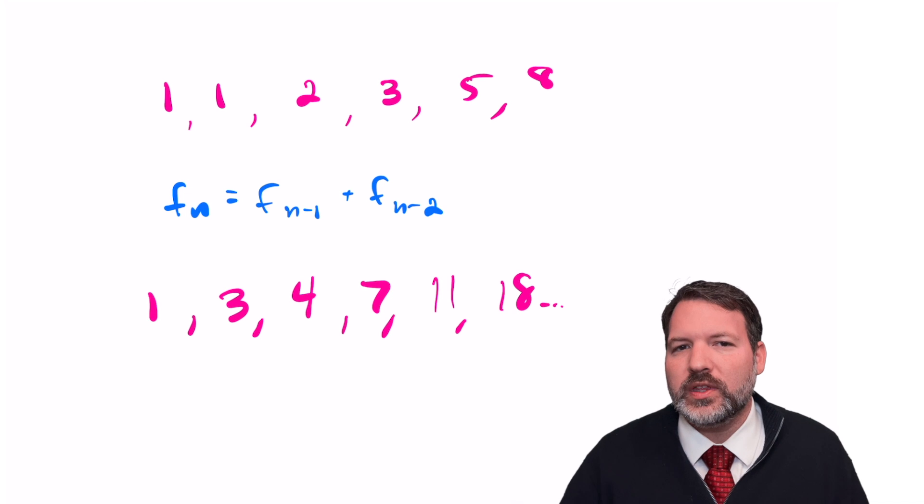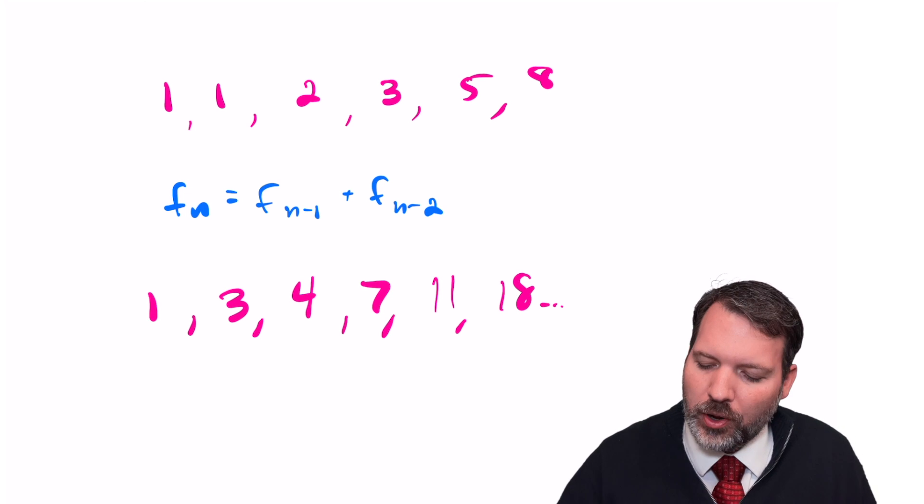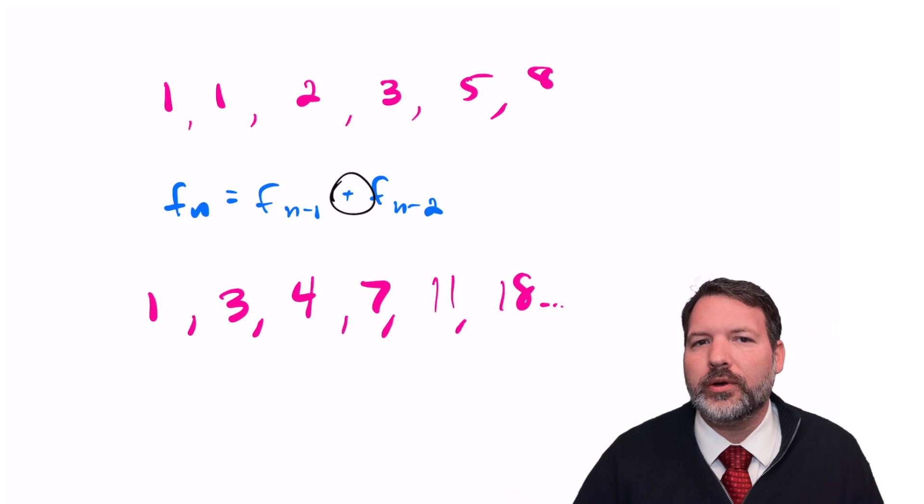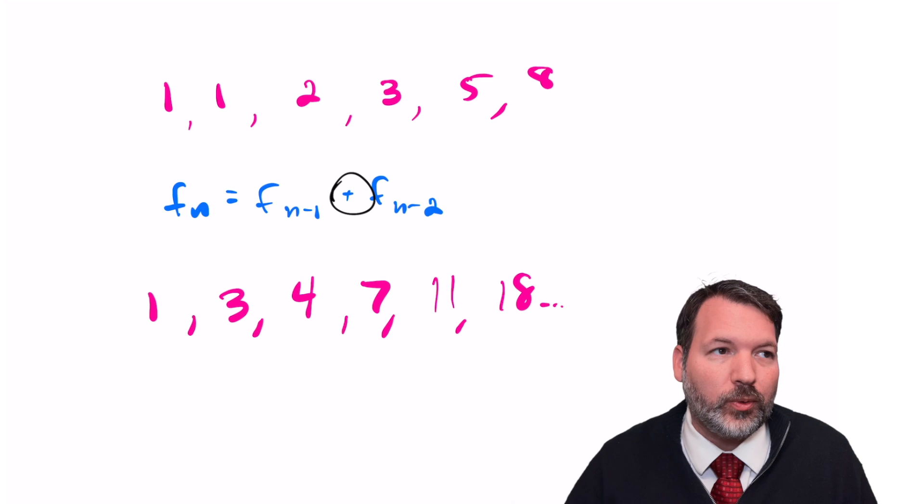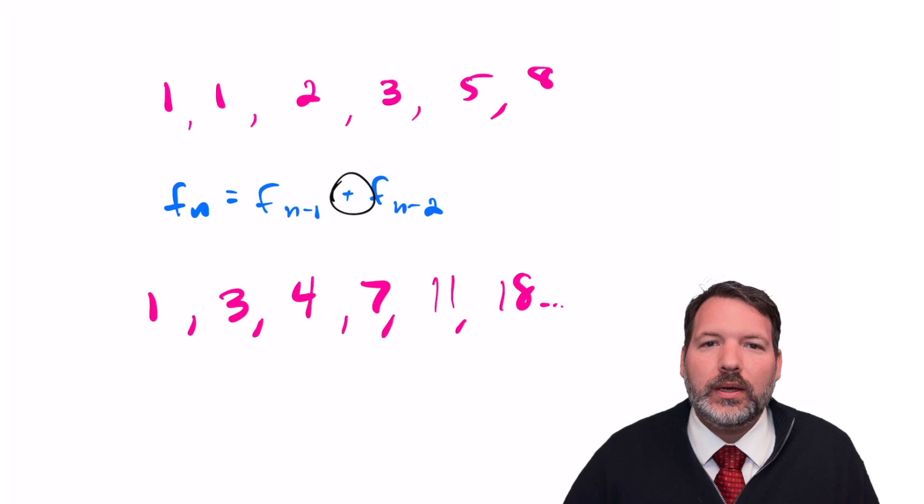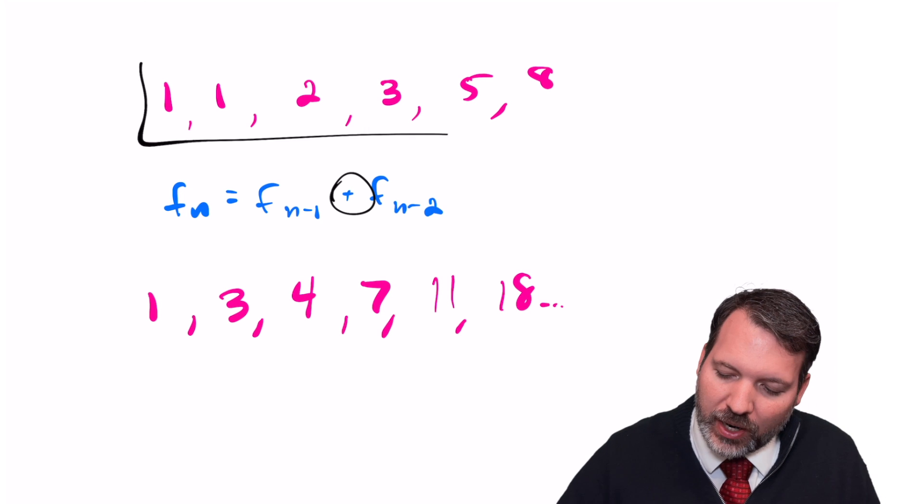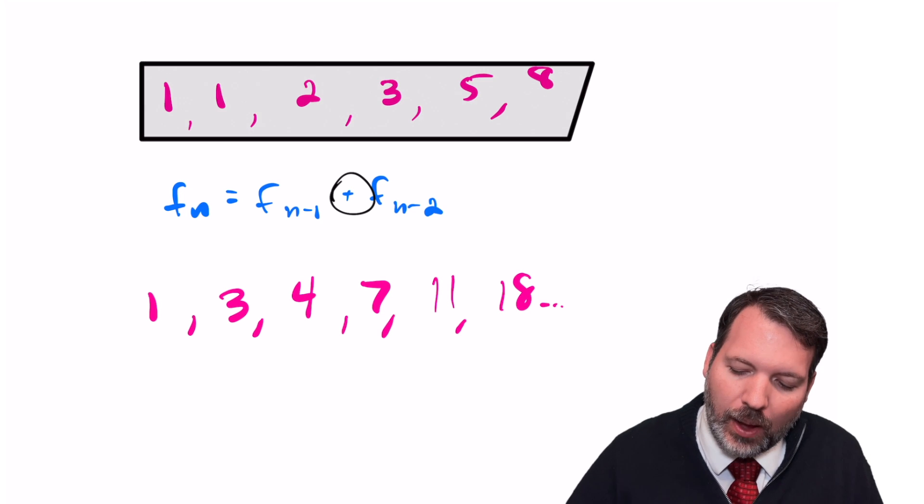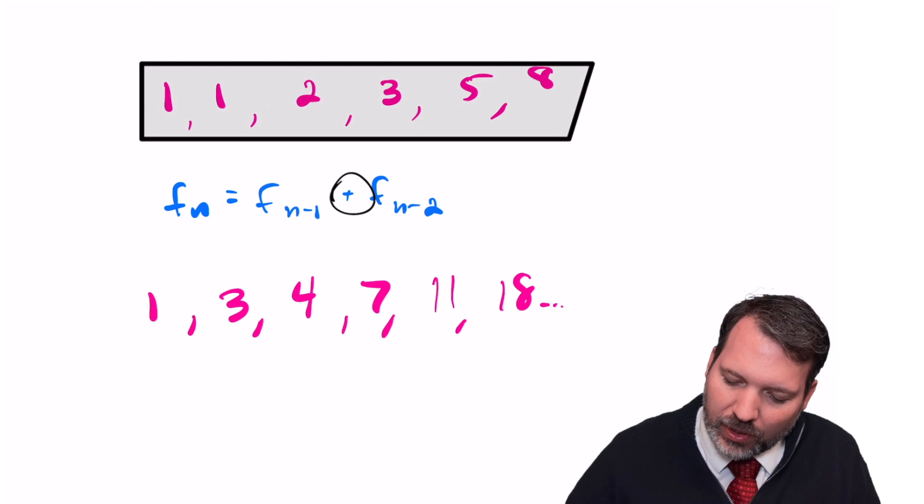One interesting feature of these kinds of sequences is that although they seem, in spirit, to be closer to an arithmetic sequence where we are adding something over and over again, in reality, they end up acting a lot more like a geometric sequence. That is, in an arithmetic sequence, we would add some common difference over and over again.